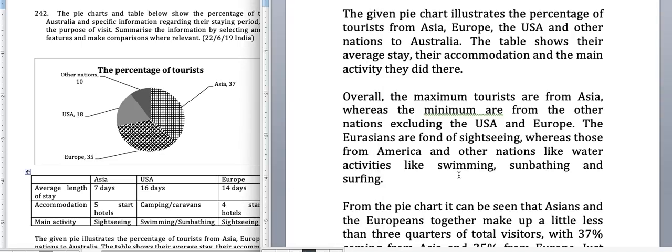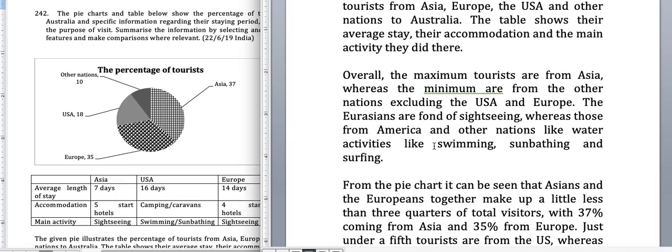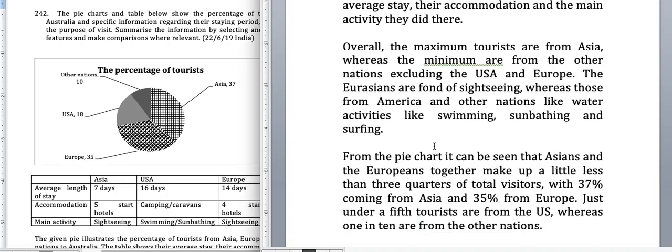Another important vocabulary area to learn is nationalities. I've used 'Europeans,' 'Asians,' and 'Americans' very naturally here. You may get any other country in the exam, so knowing the correct nationality forms will add to your lexical resource in graph writing. I hope you enjoyed watching this — thank you very much for watching patiently.